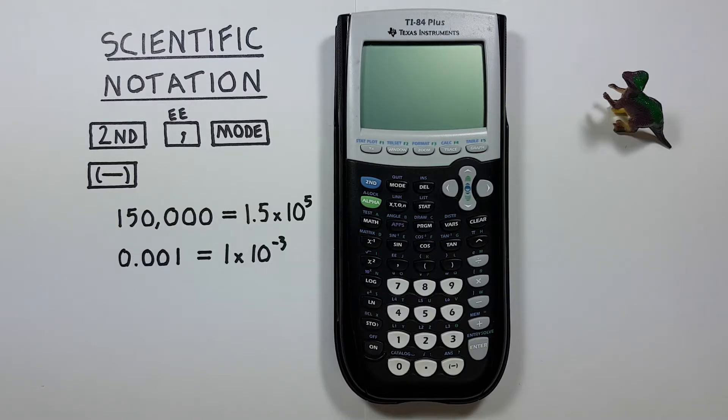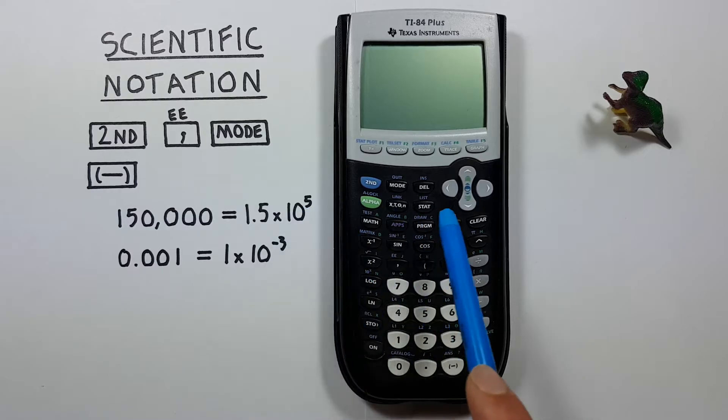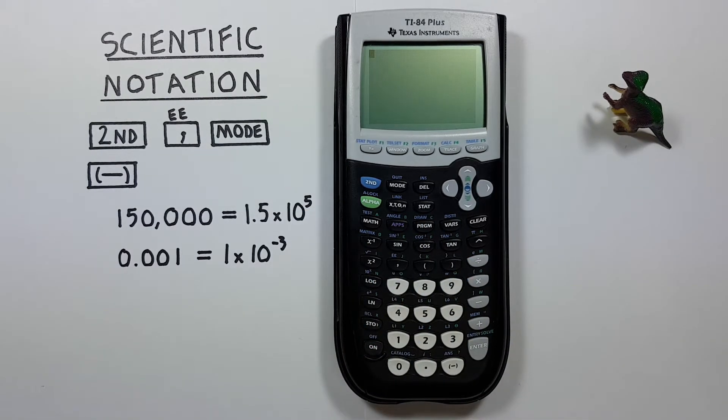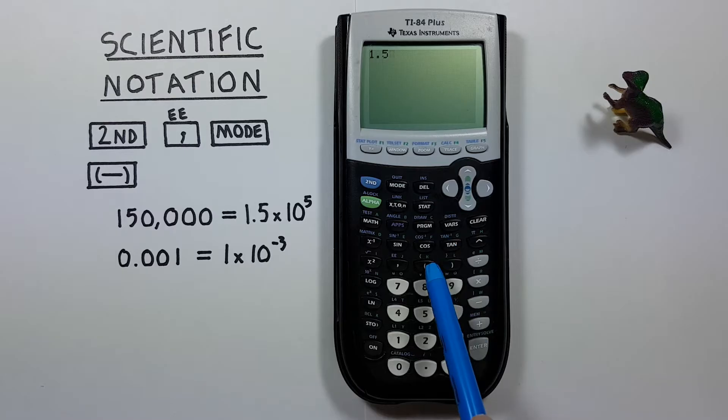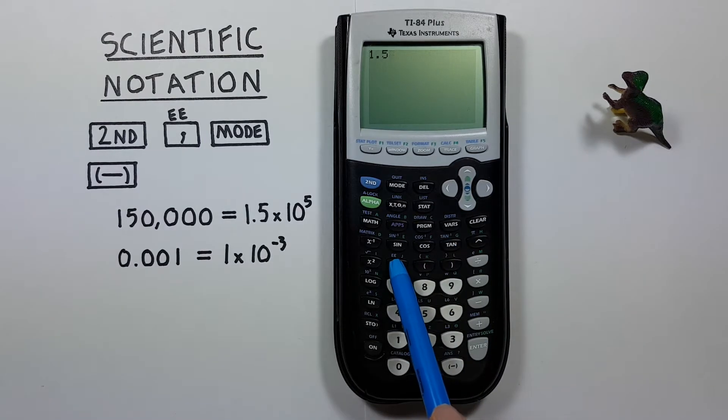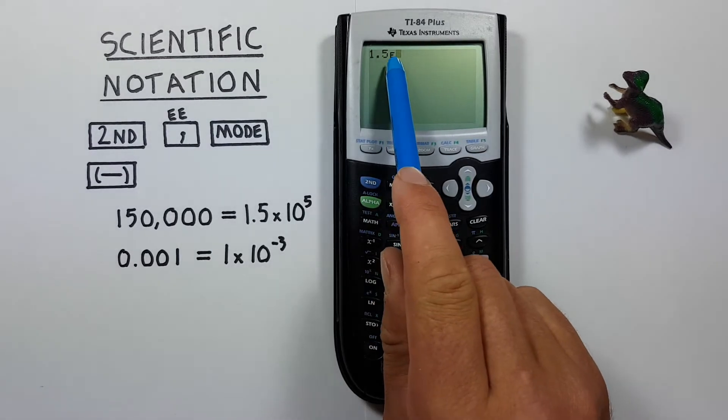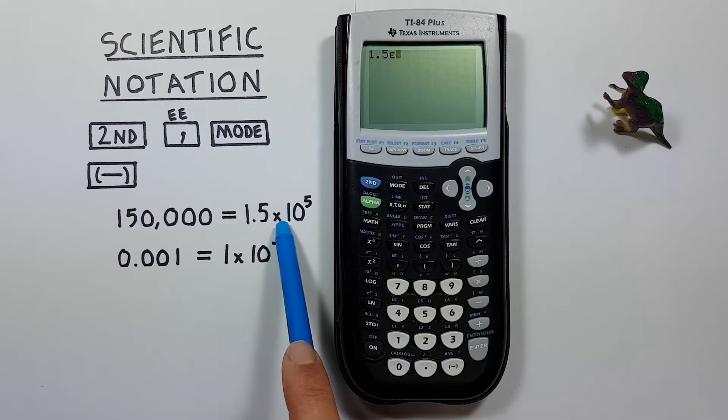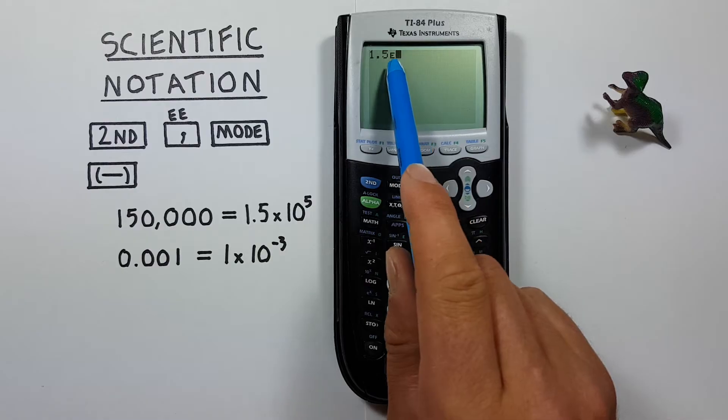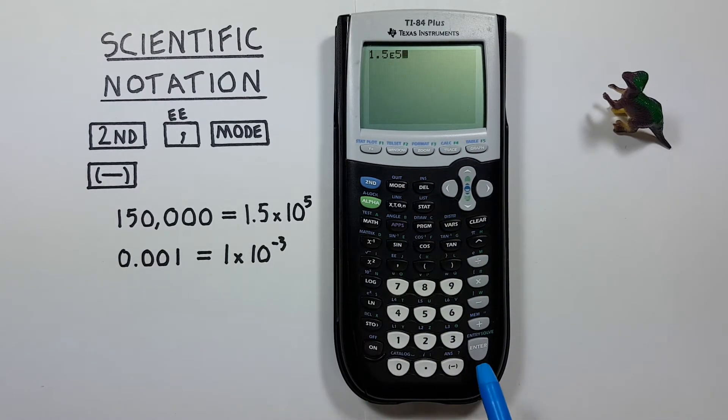If we're given a number that we want to enter in scientific notation, like for example 150,000, which in scientific notation is 1.5 times 10 to the power of 5, we can do it like this. We start by entering the 1.5 onto our screen and then we use second and then the comma key with the second function of EE. We'll see EE appear on our screen here and that EE represents the times 10 of this scientific notation. Then we just enter the exponent, which in this example is 5, and press enter.